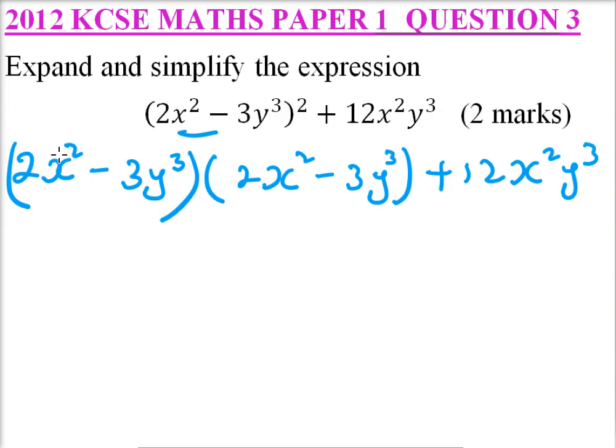So when you expand this, this will be 2x squared multiplied by 2x squared. You get 4x to power 4. Then we have minus. You multiply 2x squared multiplied by 3y cubed. So that will give us 6x squared y cubed.